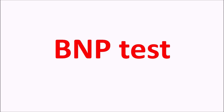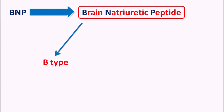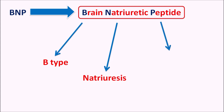Today in this video we are going to discuss about the BNP test. BNP is the brain natriuretic peptide. Since this peptide was first extracted from porcine brain, it is called brain natriuretic peptide, and the letter B can also be designated as B-type. So this is the B-type natriuretic peptide. This hormone is natriuretic, meaning it increases natriuresis — excretion of sodium — and it is a peptide in nature which is locally released. So it is a paracrine peptide having 32 amino acids.